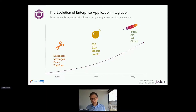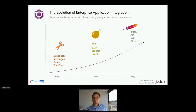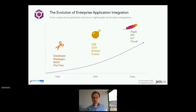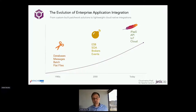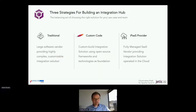What I'm seeing in the market right now is that with the evolution of Camel K and cloud providers like AWS and Azure, and also with Kubernetes, there's a real chance for integration to use these technologies and build far more flexible and agile integration platforms. We call this cloud-native integration, and that's what we want to talk about today.